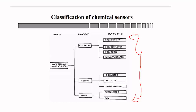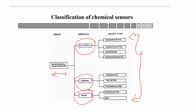Chemical sensors work on the electrical principle, thermal principle, or mass principle. Under the electrical category come chemo-resistors, chemo-capacitors, chemo-diodes, and chemo-transistors.